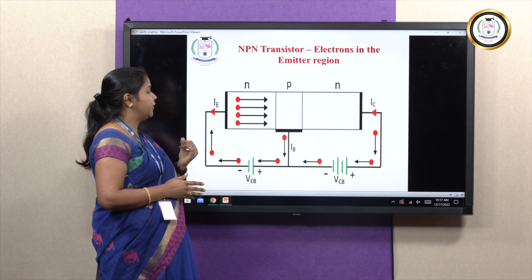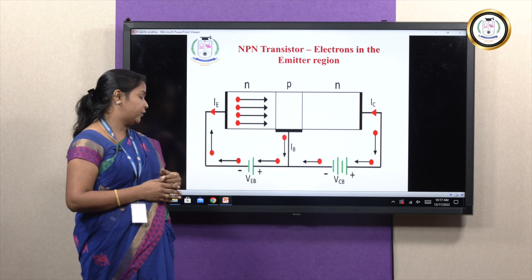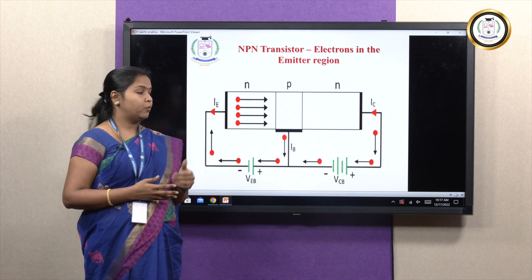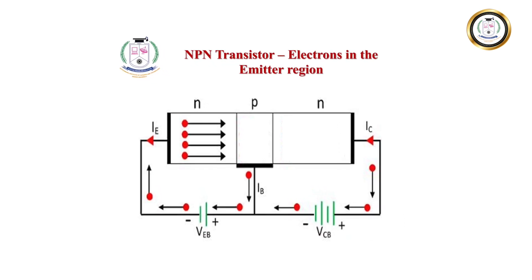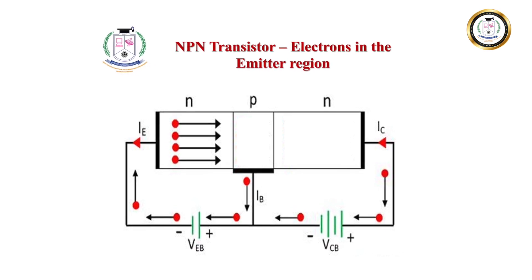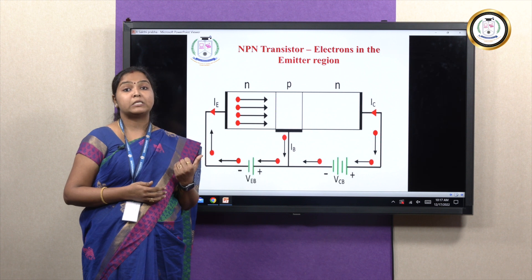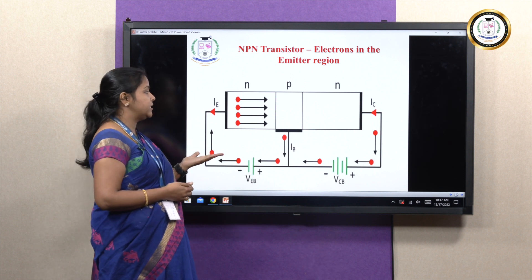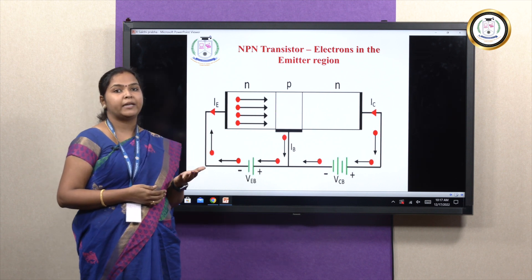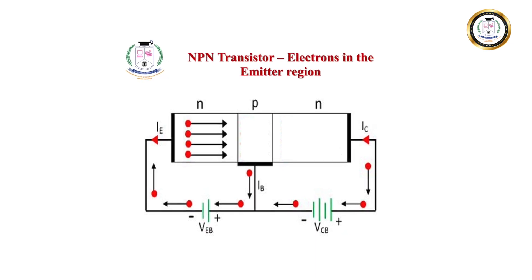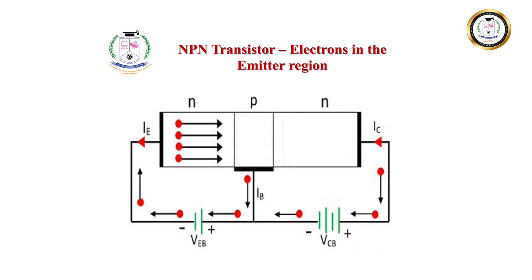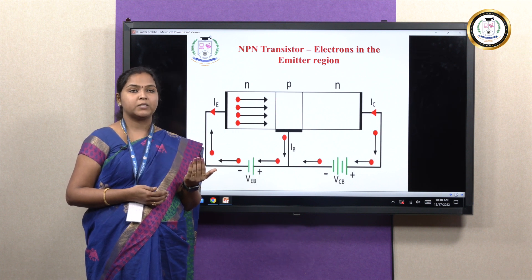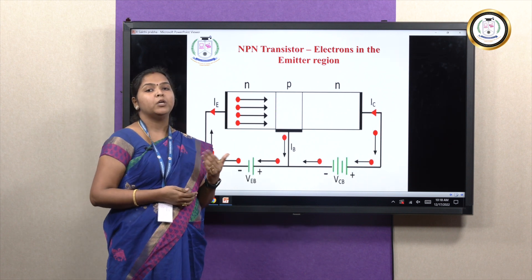Two external power supplies are chosen: one connected between emitter and base, and the other connected between collector and base. When you apply an external battery voltage across the left-hand side of the circuit, the negative polarity of the battery is connected towards the N-type material, which is the emitter region. When a negative terminal is connected to the N-type material, it works under forward active mode, which we also call forward biasing. Once forward biasing is applied, the negative terminal keeps on exhibiting negative charge ions. When these negative charge ions reach the emitter region, the majority carriers in N-type material — electrons — will be completely repelled.